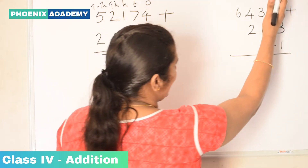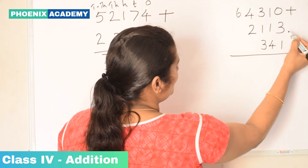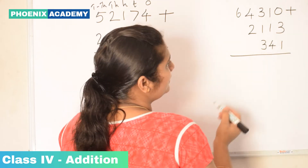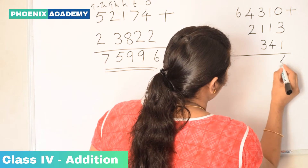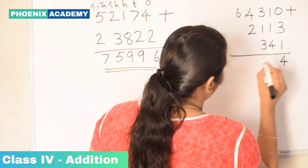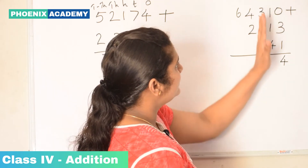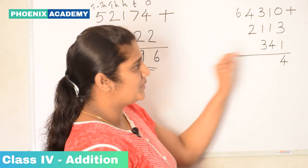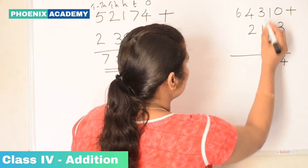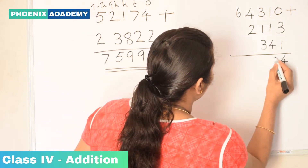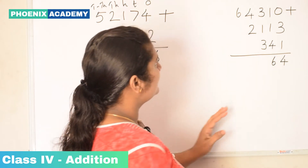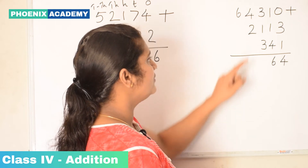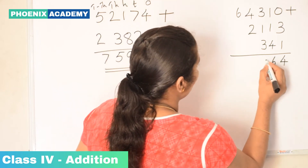Let's add ones first. 0 plus 3 is 3, then 3 plus 1 is 4. We write 4 in the ones place. Then we write 6 in the tens place. Then add the hundreds values: 3 plus 1 is 4, then 4 plus 3 is 7.